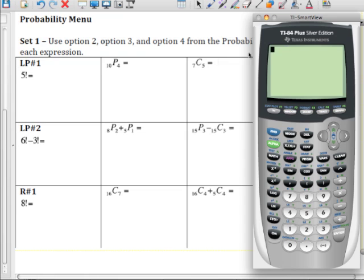So this first problem, we have five with an exclamation point, which means five factorial. I'm going to go to the calculator. I need to enter five in first, go to hit the math button.